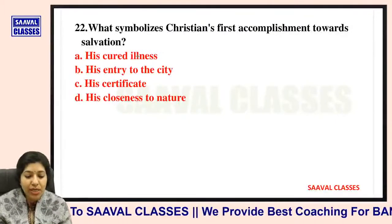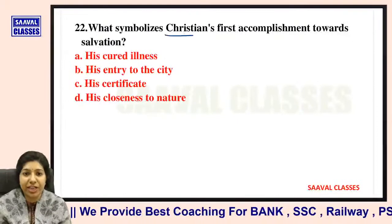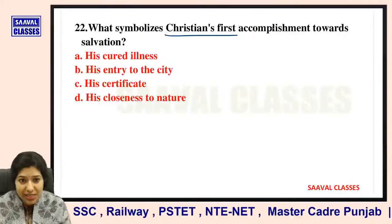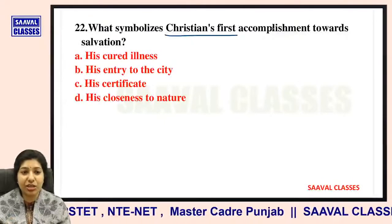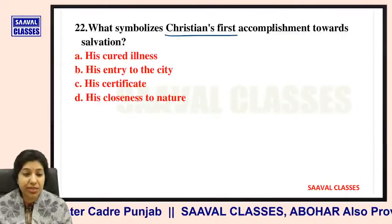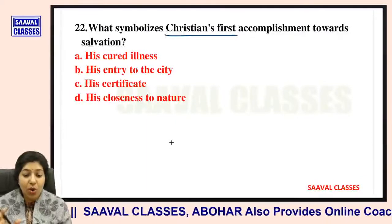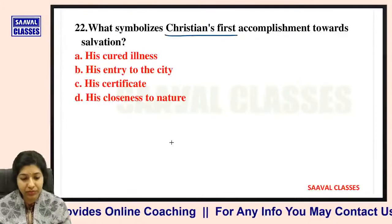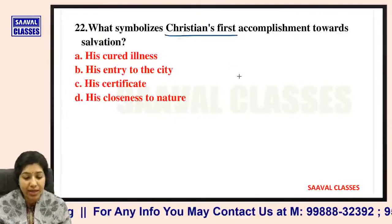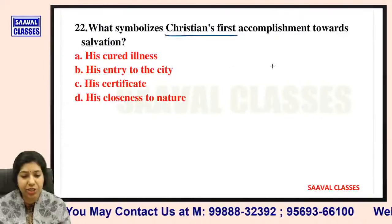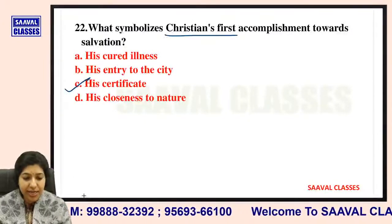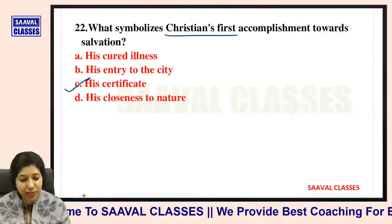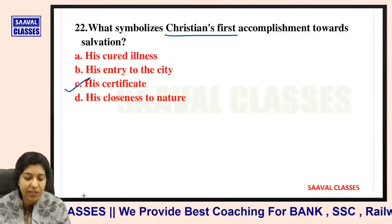Question number twenty-two: What symbolizes Christian's first accomplishment towards salvation? His cured illness, his entry to the city, his certificate, or his closeness to nature? His certificate depicts his accomplishment towards salvation — we have also just read that he misplaced that certificate earlier in the story.